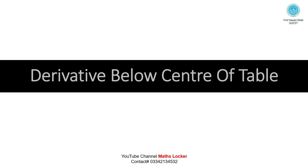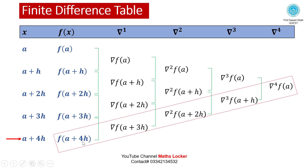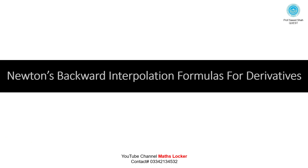For derivative below the center of the table, suppose we want to calculate the derivative at the value a+4h. Against this value is f(a+4h). Draw the backward diagonal from here. We take those values lying in the backward diagonal: first difference, second difference, third difference, and fourth difference. Then apply Newton's backward interpolation formulas for derivatives.